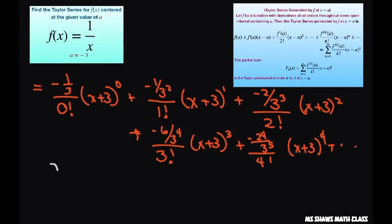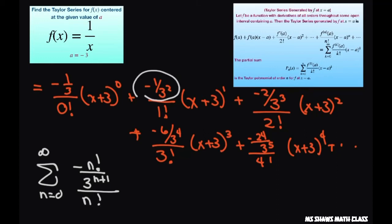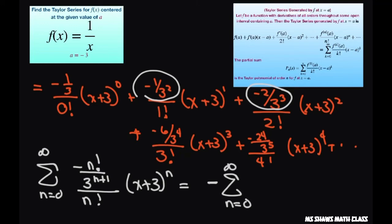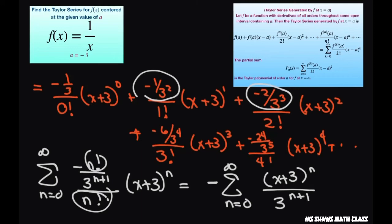So this is going to give me the sum from n equals 0 to infinity of negative n factorial divided by 3 to the power of n plus 1, all divided by n factorial, with our x plus 3 to the nth power. This simplifies to negative, pulling out the negative, sum from n equals 0 to infinity of x plus 3 to the nth power divided by 3 to the power of n plus 1. The n factorials just cancel out.